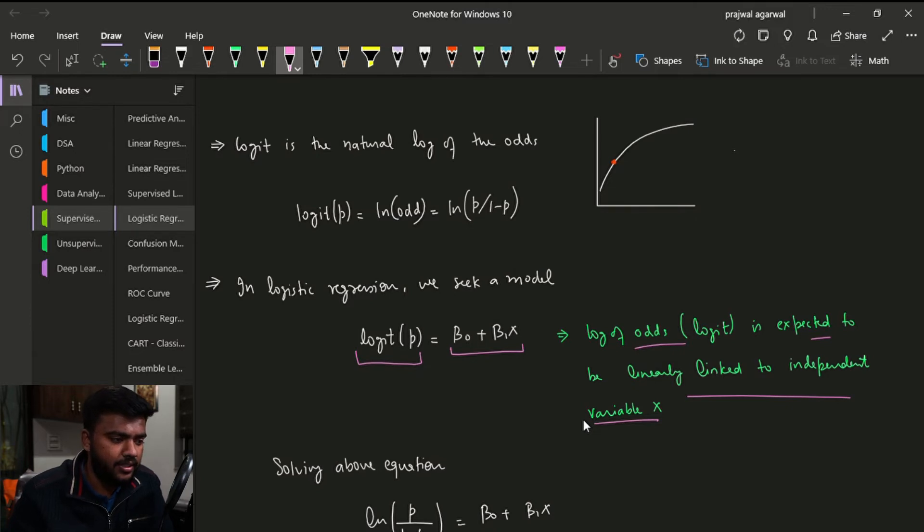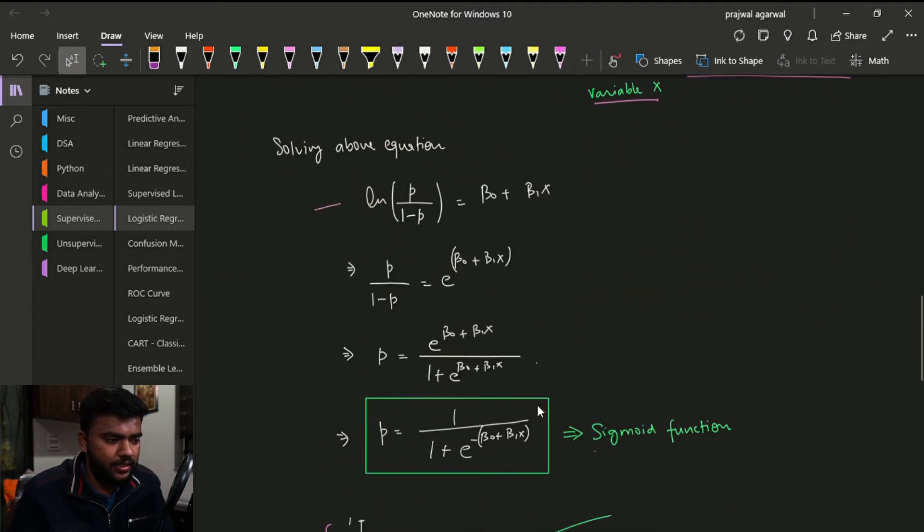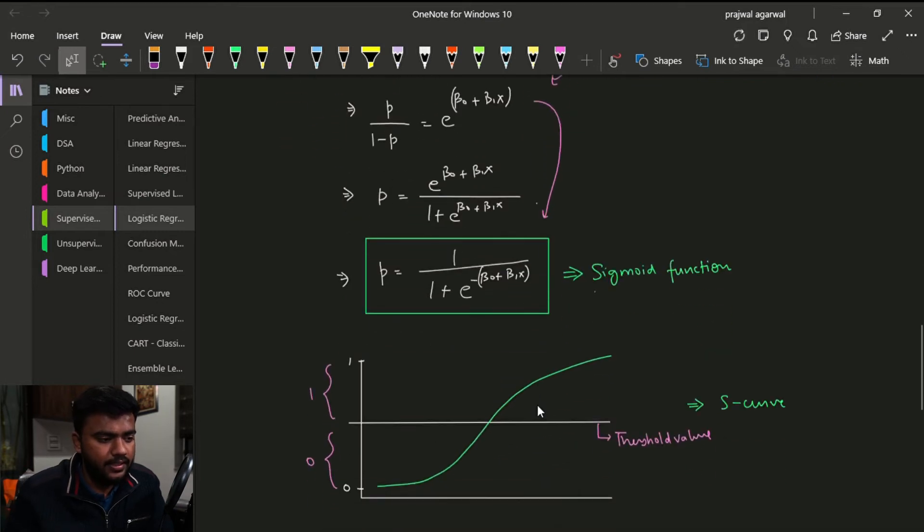And then we just perform a very simple mathematical operation where we just replace this logit with this derivable term. So then we are just performing simple mathematics. We take anti-log and then when we solve this expression, this is the expression that we get. And p was the probability—remember p was the probability of a particular event happening.